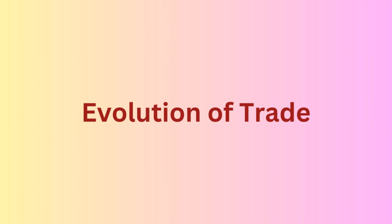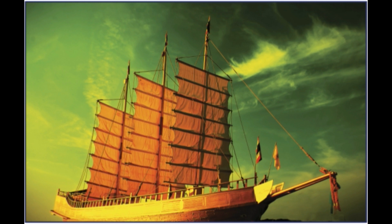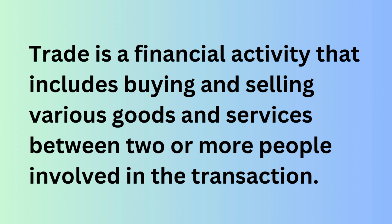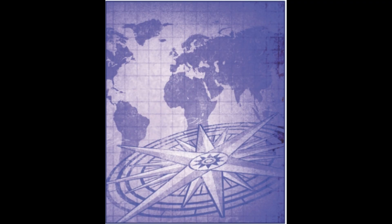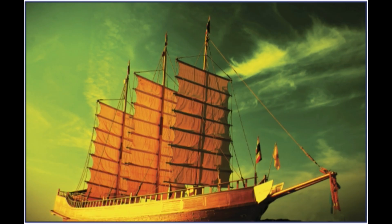Now let us see the evolution of trade. Trade is a financial activity that includes buying and selling various goods and services between two or more people. Trade can also happen between organizations and countries. For example, India primarily exports products such as rice and jewelry and imports petroleum and electronic components. The evolution of trade across countries has been closely linked with the development of the money system. Ancient trade was based on the barter system, but there is also evidence of commodities being used as currency, such as livestock, salt, metal, and rare stones.